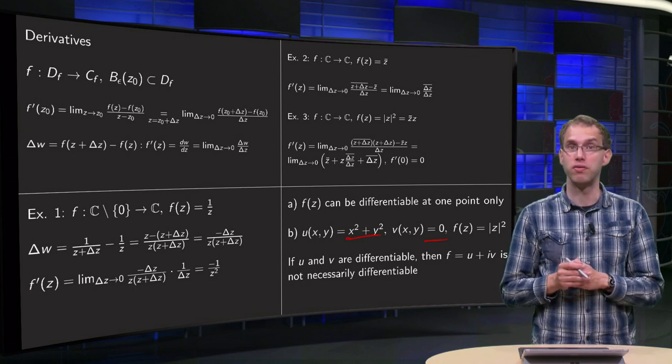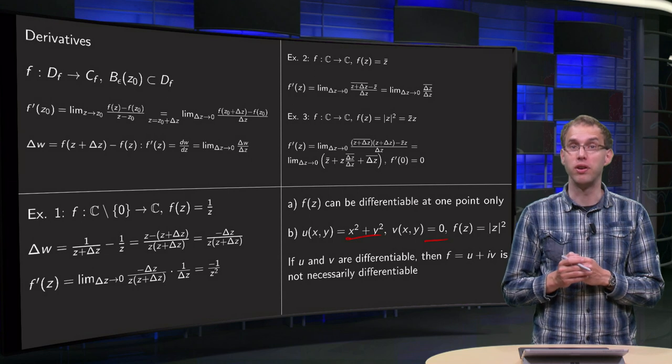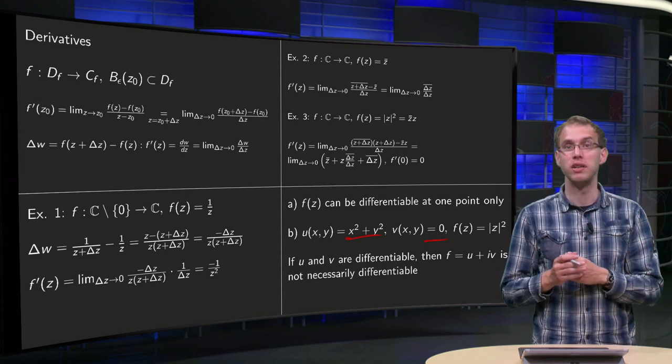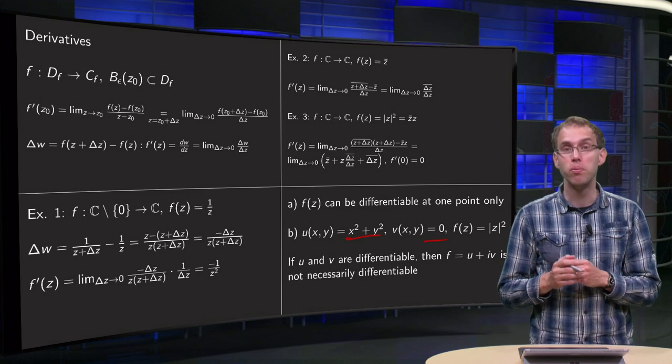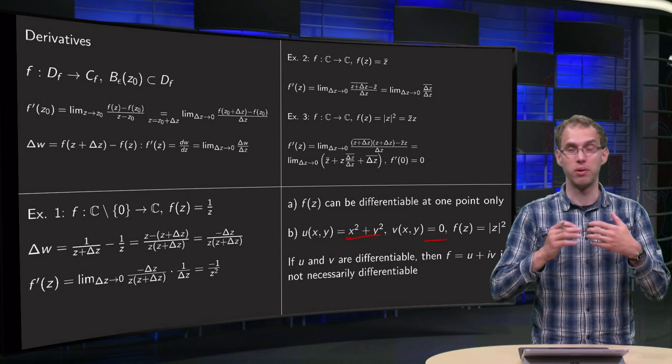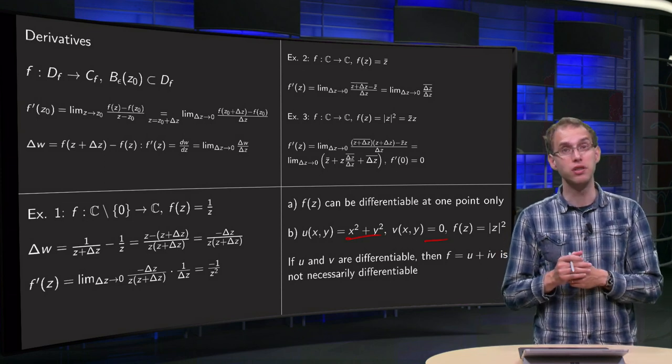u and v are both differentiable. However, f of z is not differentiable at all. So you see that differentiability is definitely more complicated than continuity, because even though u and v are in this case infinitely many times differentiable, f of z does not need to be differentiable.